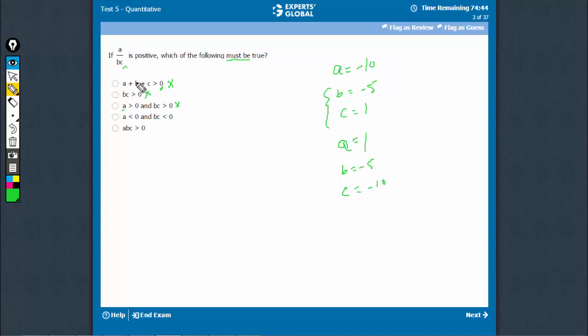However, a upon bc is still positive. abc is greater than 0. So definitely, if this is positive, the product has to be positive. Either 2 can be negative or none of them have to be negative. It is not possible that 1 or 3 of them become negative. So if the ratio is positive, then the product also has to be positive. This is definitely true.